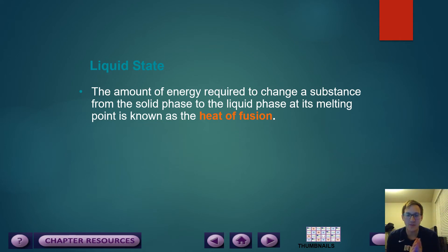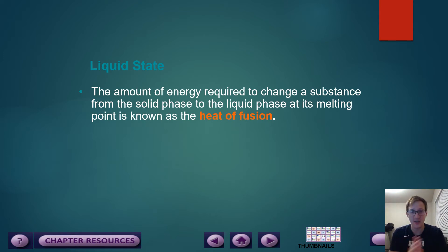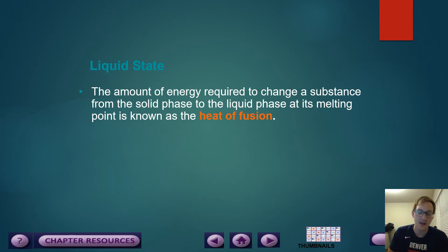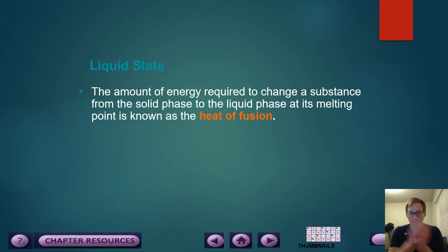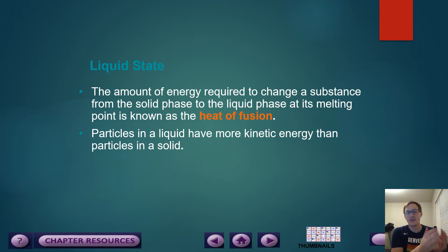Make sure that this is different from what I'm going to describe as the heat of fusion. Melting point is a temperature. The amount of energy required to change a substance from the solid phase to the liquid phase at its melting point is known as the heat of fusion. Heat of fusion is the measure of energy required — so heat of fusion is energy, melting point is temperature. Heat of fusion is basically saying we have gained enough energy to change this solid to a liquid, so heat of fusion is solid to liquid. Particles in a liquid have more kinetic energy than the particles in the solid.